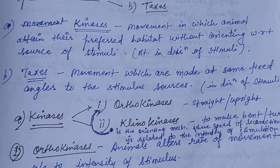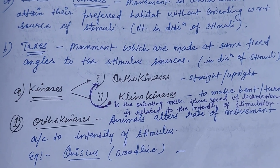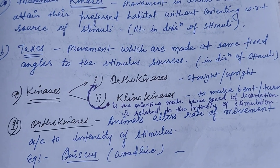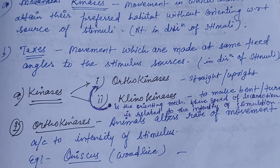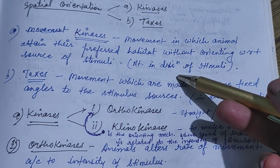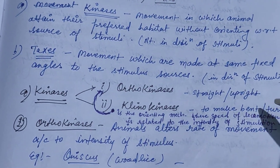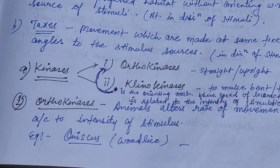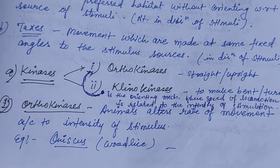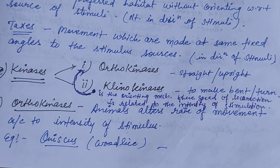Kinases may be defined as movement in which an animal attains its preferred habitat without orienting with respect to the source of stimuli — not in the direction of stimuli. Taxis is the movement made at fixed angles to the stimulus source — in the direction of stimulus. So kinases refers to movement in the anti-direction of stimuli, and taxis refers to movement in the direction of stimuli. Kinases may be orthokinesis and klinokinesis. Orthokinesis means straight or upright position; klinokinesis means bent or turning.